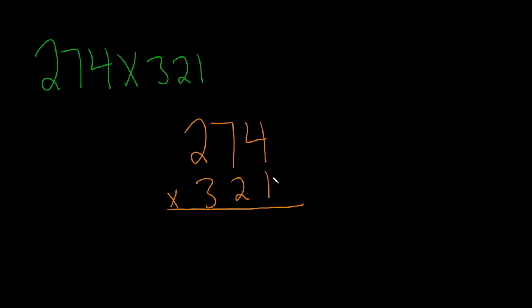Then you start the process. Let's start with the 1. 1 times 4 equals 4, 1 times 7 is 7, 1 times 2 is 2.